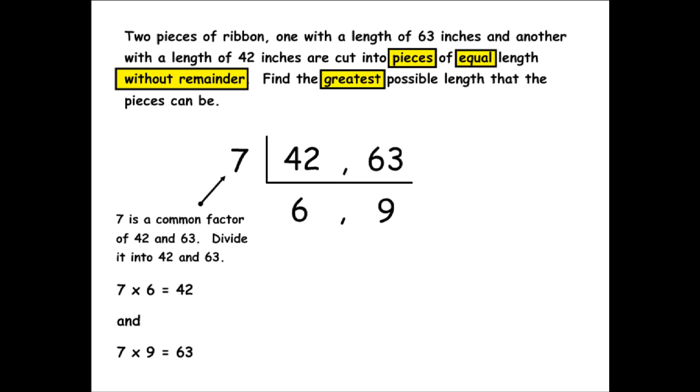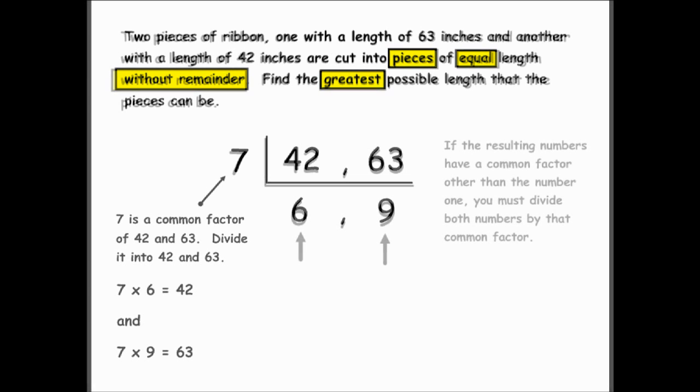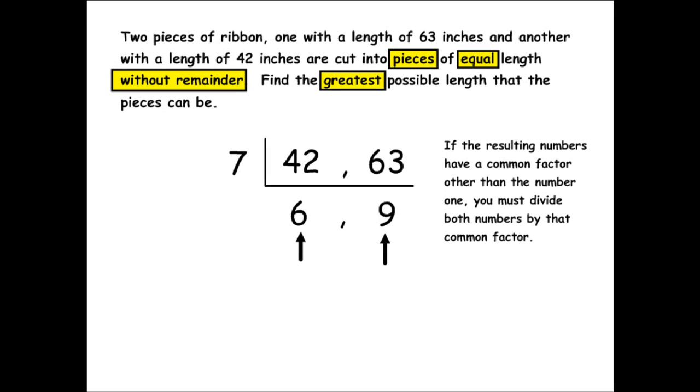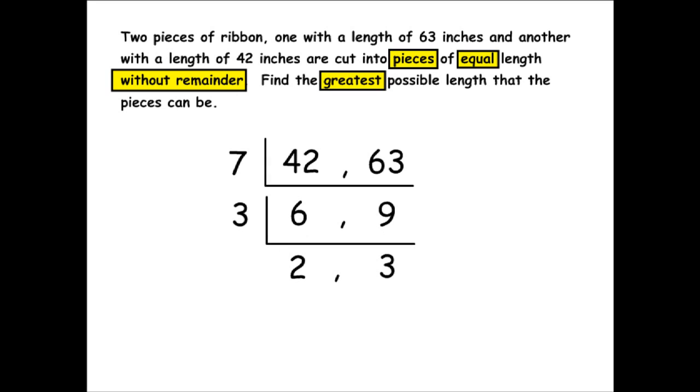Now we have to check to see if 7 is our greatest common factor, or only a common factor. If the numbers we have at the bottom share a common factor other than the number 1, we did not find the greatest common factor yet. And 6 and 9 have a common factor of 3, so we must divide that common factor into 6 and 9. 3 can be divided into 6 twice, and 3 can be divided into 9 3 times.